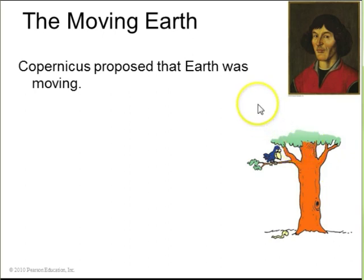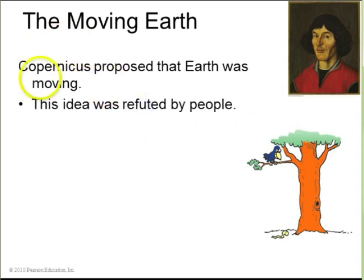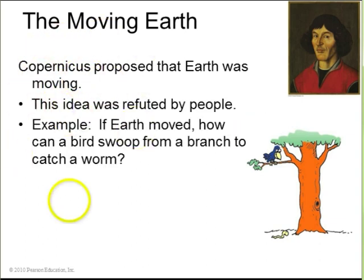Now Copernicus came up with the idea that the Earth is orbiting the Sun, and so it's moving. And many people refuted this idea, coming up with this example. If there's a tree, the bird sitting in it, and a worm down below, and the tree is moving to the right very quickly because the Earth is orbiting the Sun, then how could this bird dive down towards the worm and catch it without being kind of blown away or moved by the motion of the tree?